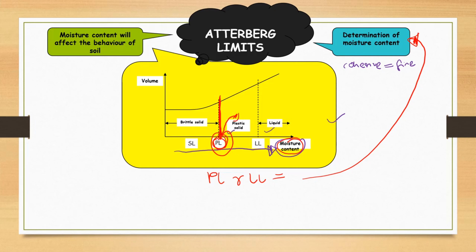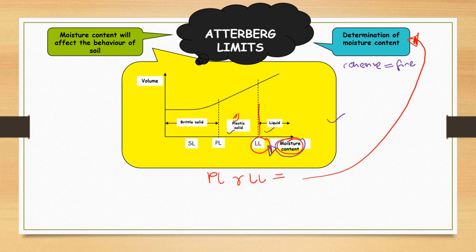Talking about liquid limit, it means the moisture content in the soil when it stops acting as liquid and starts acting as plastic solid. The liquid limit is the minimum amount of water for that particular soil to behave as liquid. Both plastic limit and liquid limit are moisture content values, but they represent the moisture content at different stages of soil behavior.